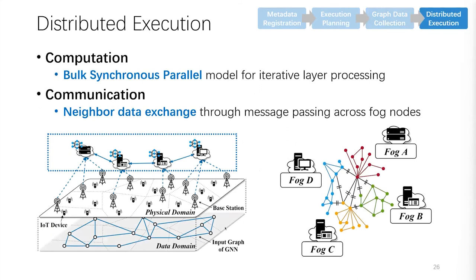With the collected data, the last step of FogGraph performs distributed execution over multiple fog nodes. To orchestrate the collaboration, we employ the bulk synchronous parallel model for iterative layer processing. For each GNN layer, cross-fog data exchanges are carried out if a vertex's neighbor data belongs to different data partitions. Then inference functions including aggregate and update are invoked by the fog nodes to compute the layer over the data partitions in parallel. Repeating this process for all layers completes the whole execution and produces the expected embeddings.